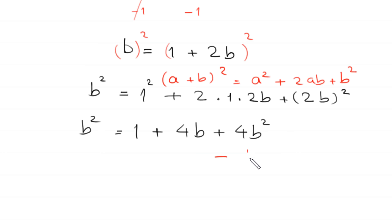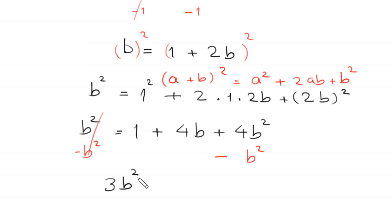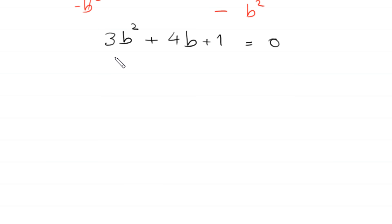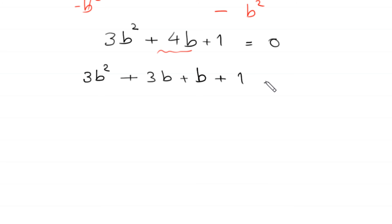Now we subtract b squared from both sides. This positive b squared is cancelled with the negative b squared, and this equation becomes 4b squared minus 1b squared, which is 3b squared, plus 4b plus 1 is equal to 0.